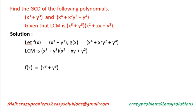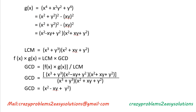The given LCM is (x³ + y³)(x² + xy + y²). Let f(x) = x³ + y³ and g(x) = x⁴ + x²y² + y⁴. The LCM is given as (x³ + y³)(x² + xy + y²), so we need to find the GCD using f(x) and g(x).